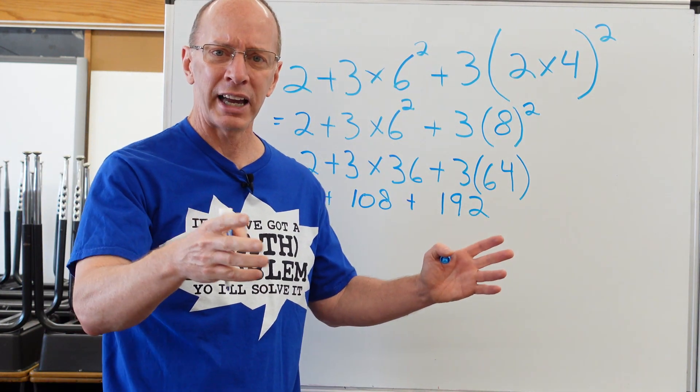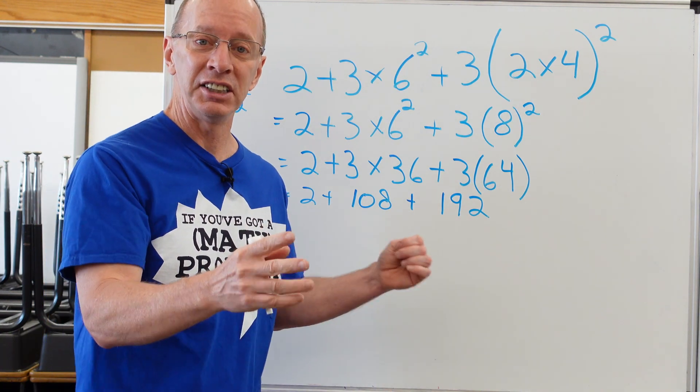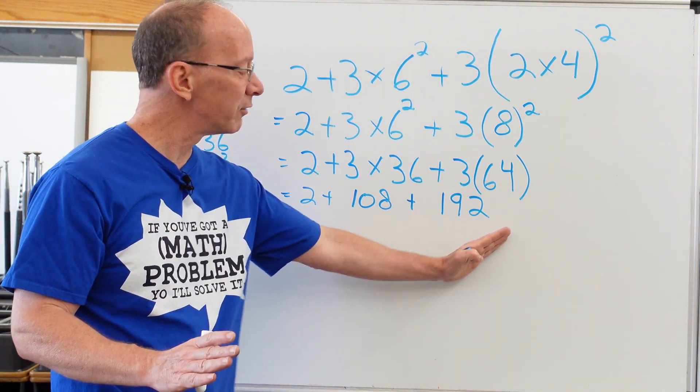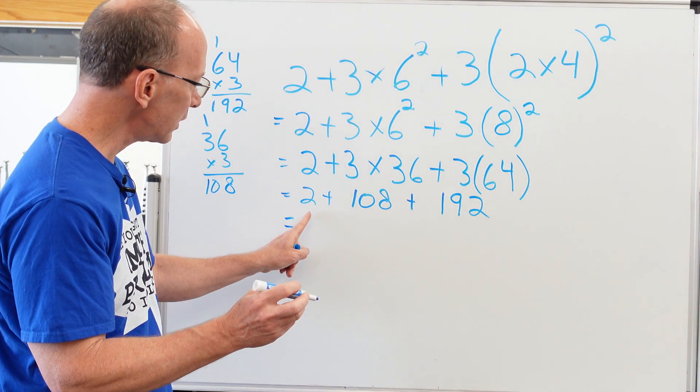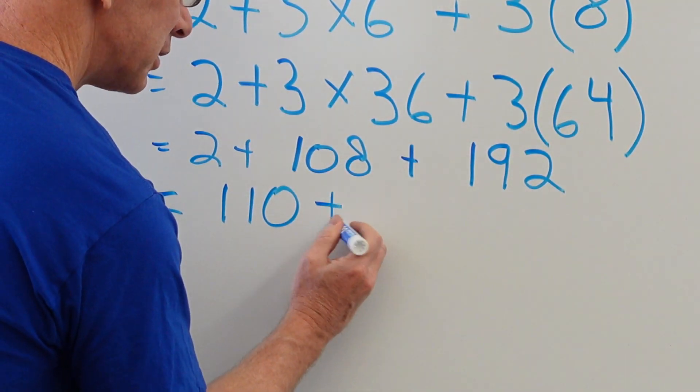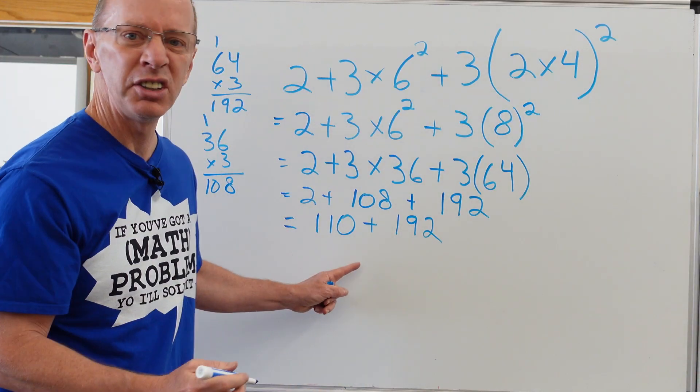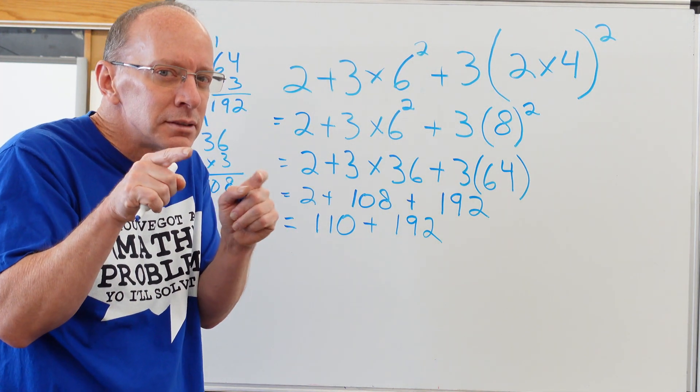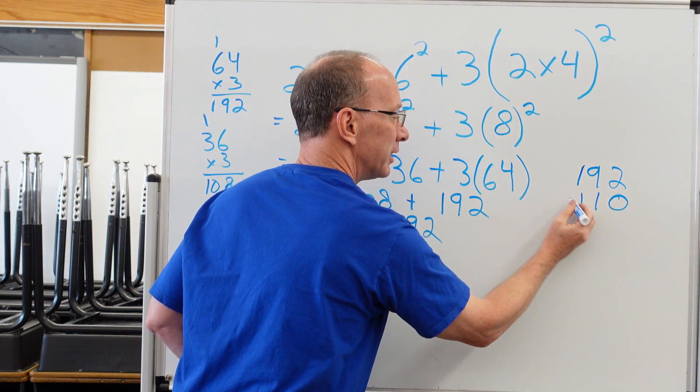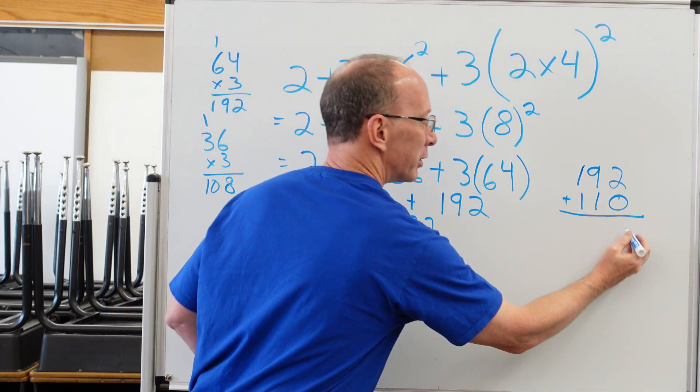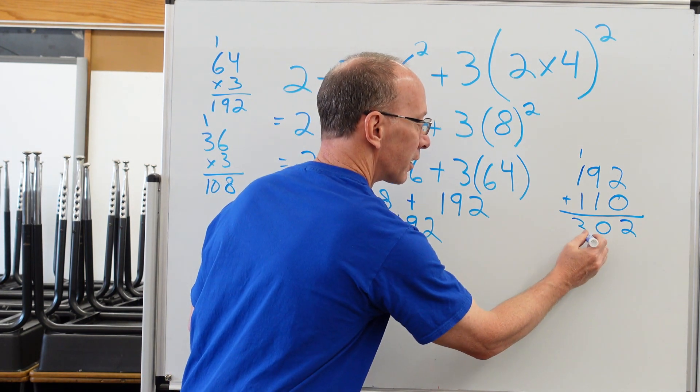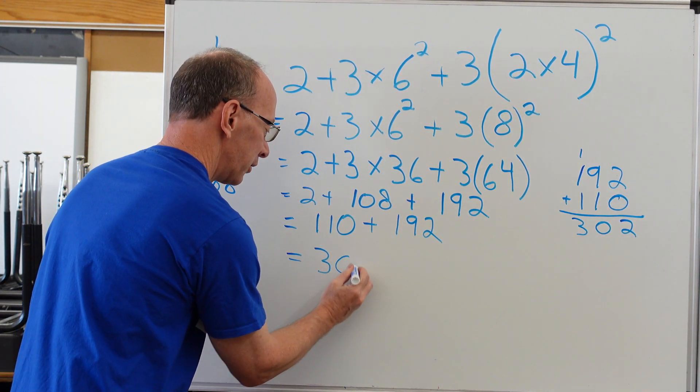Did we finish multiplication and division? We did. Now we just have addition. Let's move from left to right. 2 + 108 is 110, plus 192. You ready to check it? So you would take 192 plus 110. Bring the two down here, nine plus one is ten, carry the one, one plus one plus one is three. Our answer is 302.